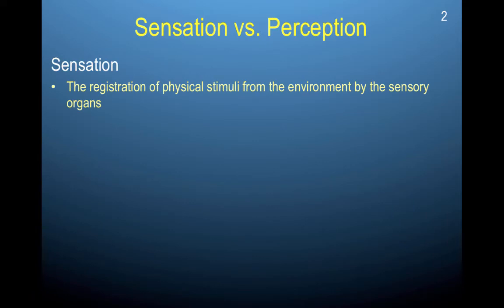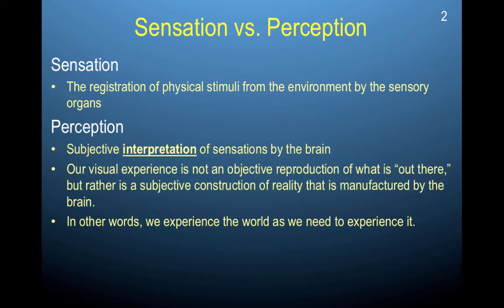To give you the actual definitions: sensation is the registration of a physical stimuli from the environment by sensory organs. Perception, on the other hand, is the subjective interpretation of sensations by the brain. When most people think of the term perception, they don't really think of its subjective nature.